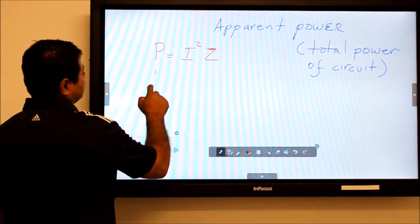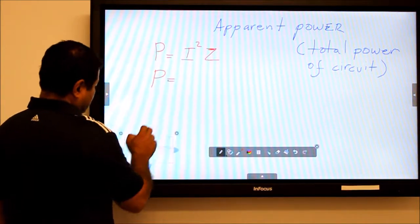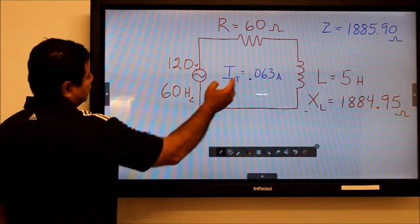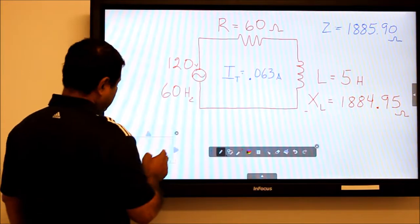So let's do that and get some values. We have the current - the total current is 0.063 amps.